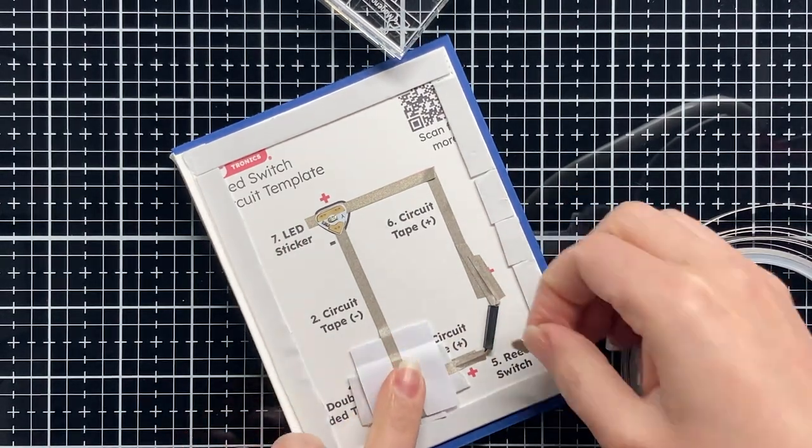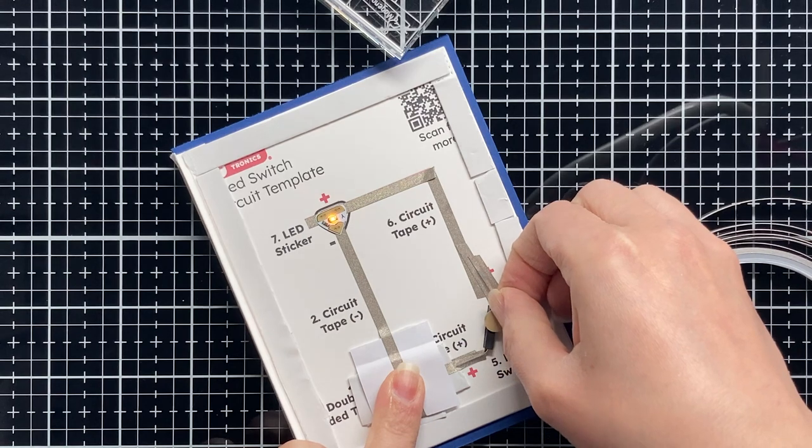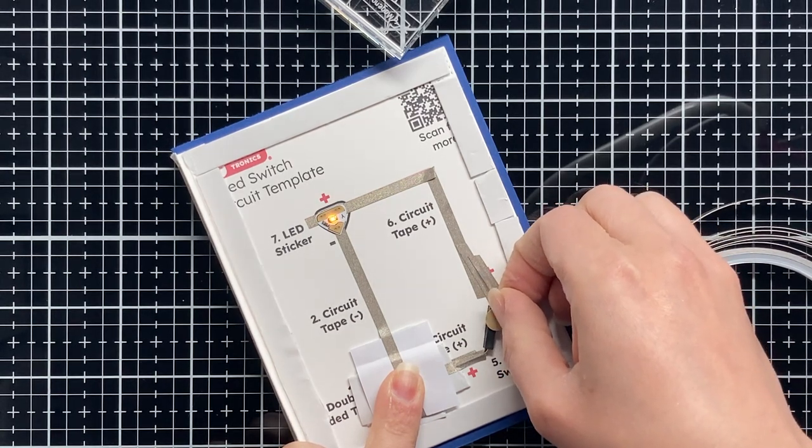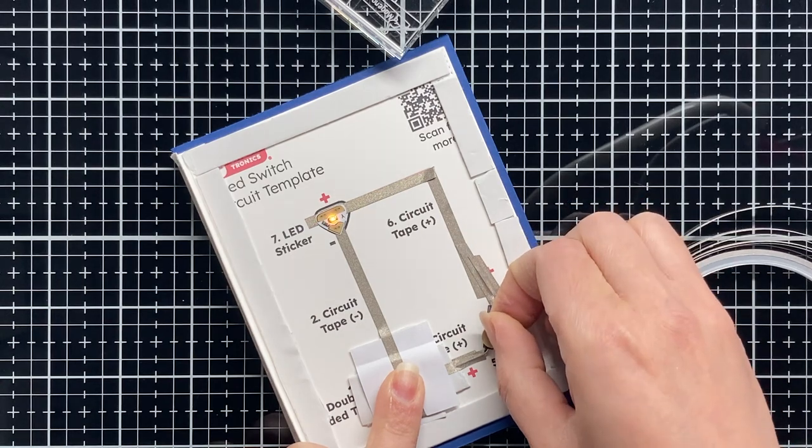So now let's check our circuit, and voila! As soon as we touch the magnet on the reed switch, the light goes on.